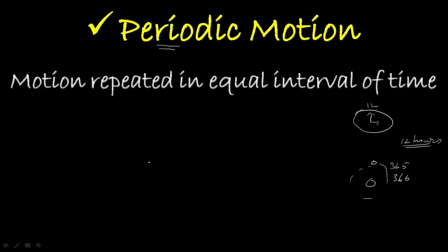The interval of time for a repetition of motion is called the period. For the hands of a clock, after 12 hours it starts rotating the same way again — at 24 hours and 48 hours it comes back to the same point. The smallest such interval is what we call the period, or primitive period, or fundamental period.